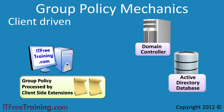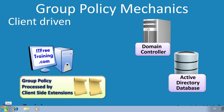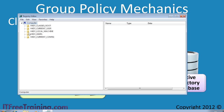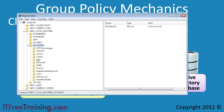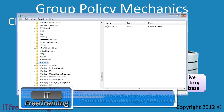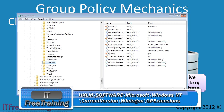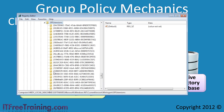Once the client receives the Group Policy from the domain controller, it is up to the client to apply it to the operating system. This is done by software on the client called client-side extensions. For example, there are client-side extensions that are responsible for creating shortcuts, and other extensions for installing applications. To see which client extensions are installed, I will open regedit from the start menu and then navigate down through the registry to the following location. You are not required to know this for the exam, but understanding how it works will improve your overall understanding of Group Policy.